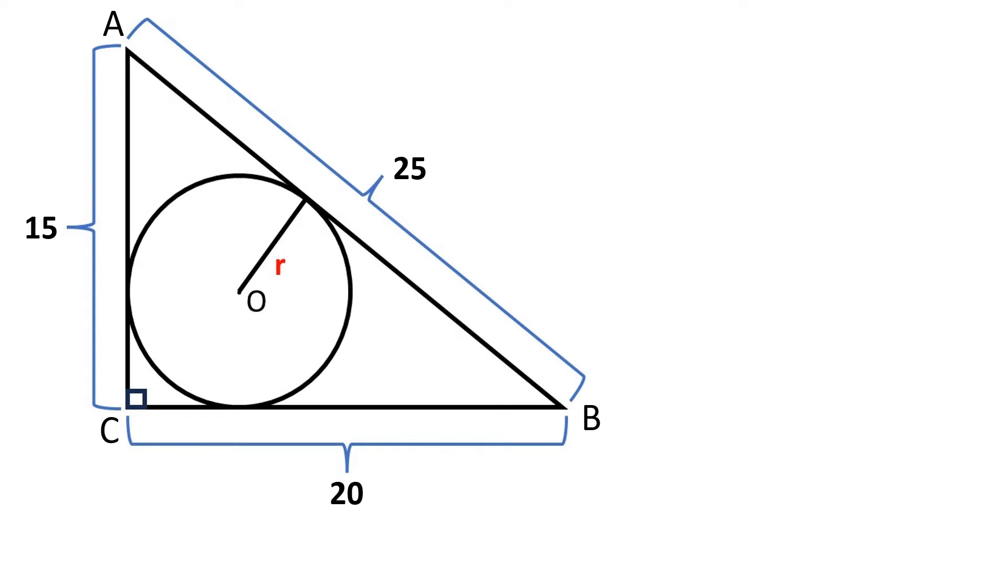To solve this problem, we need to use the following formula. The radius of a circle inscribed in a right triangle is half of the sum of the triangle leg lengths minus the hypotenuse lengths,